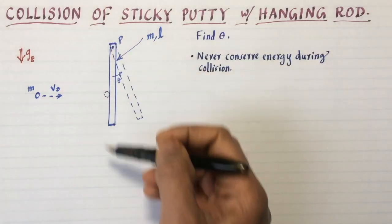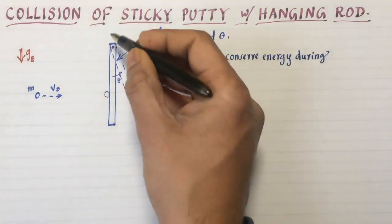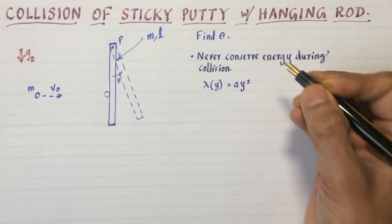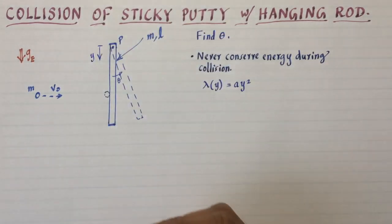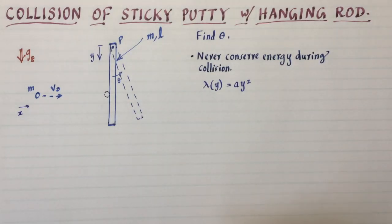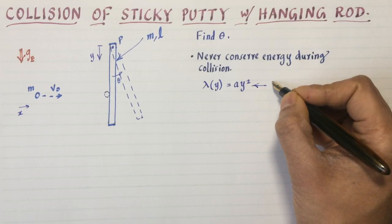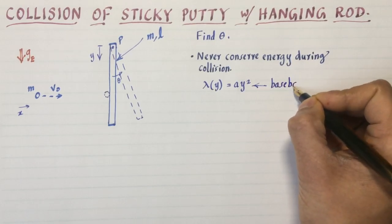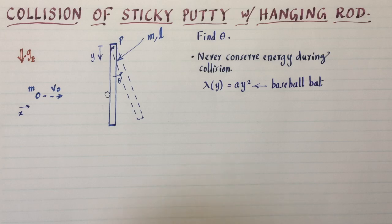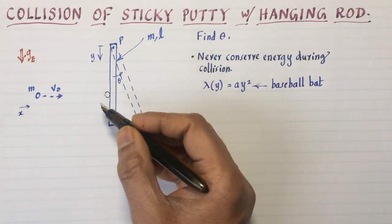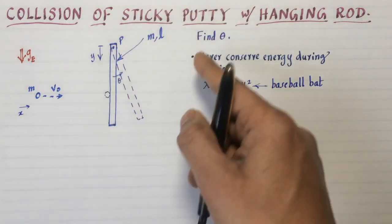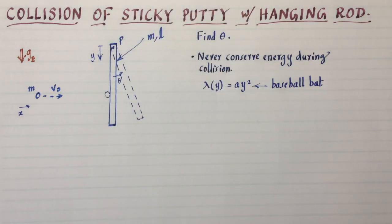To make this problem more interesting, I'm going to take the rod to be non-uniform. Let's assume lambda y equals a y squared where the y axis starts getting measured from down there. An object of this type simulates something familiar to you, the baseball bat. You can think of this as a baseball game where the ball melts and sticks to the bat held at point B, causing it to swing out.